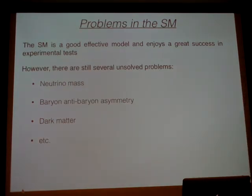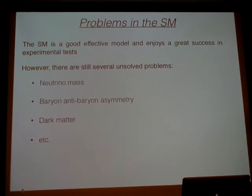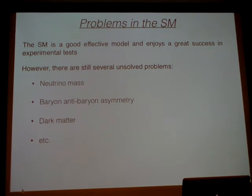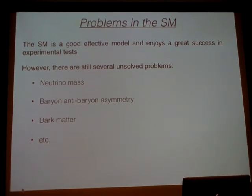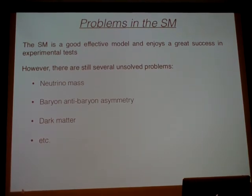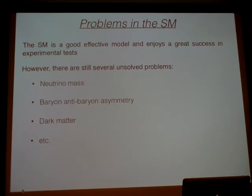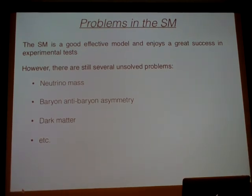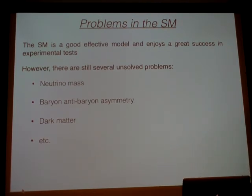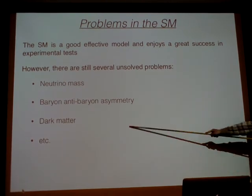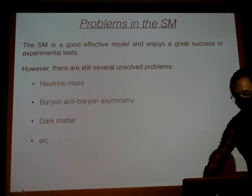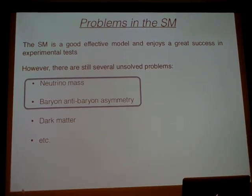Let's first review the problems we are interested in. The standard model is great and enjoys great success in experimental tests, but there are problems it cannot solve. First is neutrino mass — in the standard model, neutrinos are exactly massless, but we know from neutrino oscillation experiments that neutrinos have tiny but non-zero mass. Second is the baryon-antibaryon asymmetry in the universe. Standard model and standard cosmology together predict too small a baryon asymmetry. We need BSM physics to explain both. Today I focus on these first two problems.